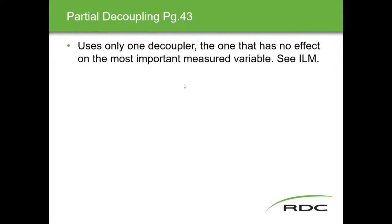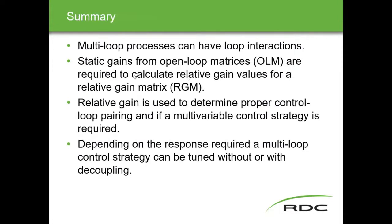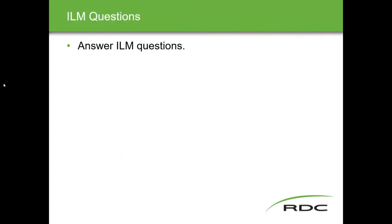Summary: multi-loop processes can have loop interactions and most often they do. Static gains calculated from open loop matrices are required to calculate the gain values for the RGM. The RGM is used to determine proper control loop pairing and determine the severity — telling us whether or not we need a multi-variable strategy. Depending on the response required, a multi-loop strategy can be tuned with or without decoupling. This is probably the most difficult ILM in advanced process control — a good reason to cover it third rather than first.